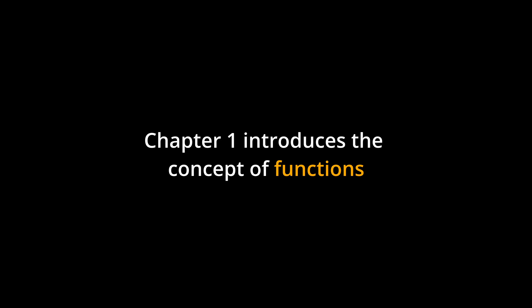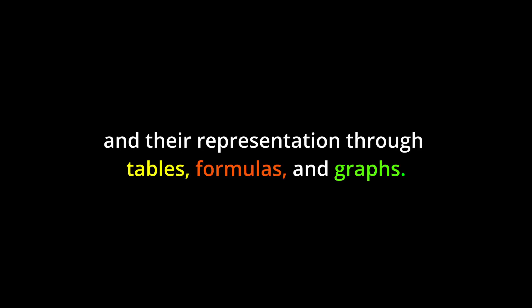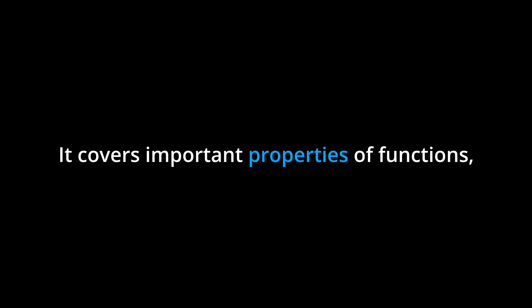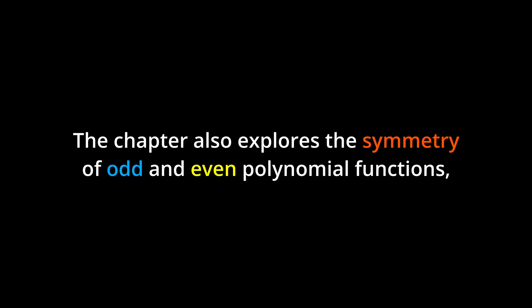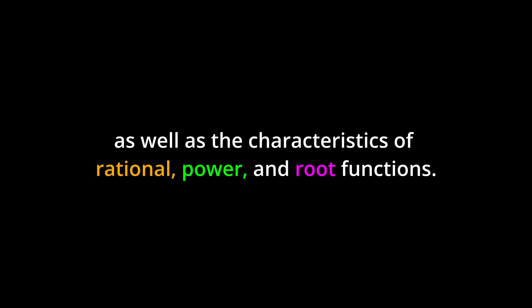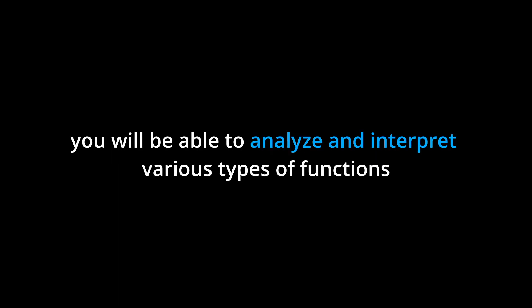Conclusion: Chapter one introduces the concept of functions and their representation through tables, formulas, and graphs. It covers important properties of functions such as slope, degree, and roots of polynomials. The chapter also explores the symmetry of odd and even polynomial functions, as well as the characteristics of rational, power, and root functions. By understanding these concepts, you will be able to analyze and interpret various types of functions and apply them to real world situations.